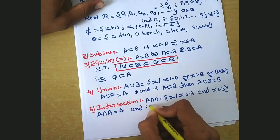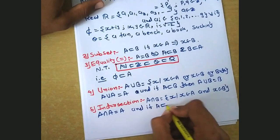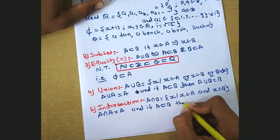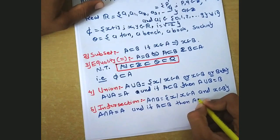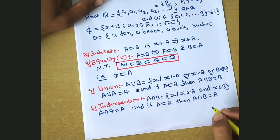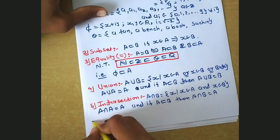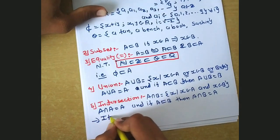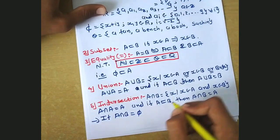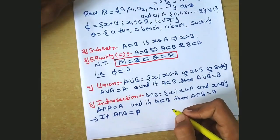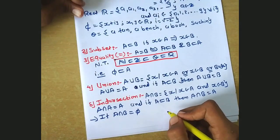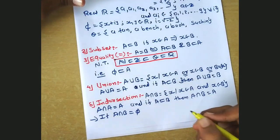Another condition: if A is a subset of B, then A intersection B is equal to A. Also, if A intersection B is equal to phi, this means both sets are disjoint sets.